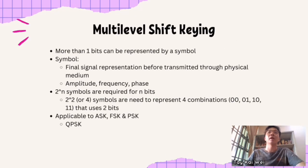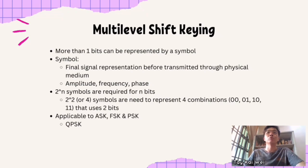For multi-level shift keying, more than one bit can be represented by a symbol. A symbol is the final signal representation before transmission through a physical medium, such as amplitude, frequency, and phase. 2 to the power of n symbols are required for n bits. For example, 2 squared equals 4 symbols are needed to represent the 4 combinations — 00, 01, 10, and 11 — using 2 bits. This multi-level shift keying is applicable to ASK, FSK, and PSK, and is proven particularly useful in PSK, such as QPSK.